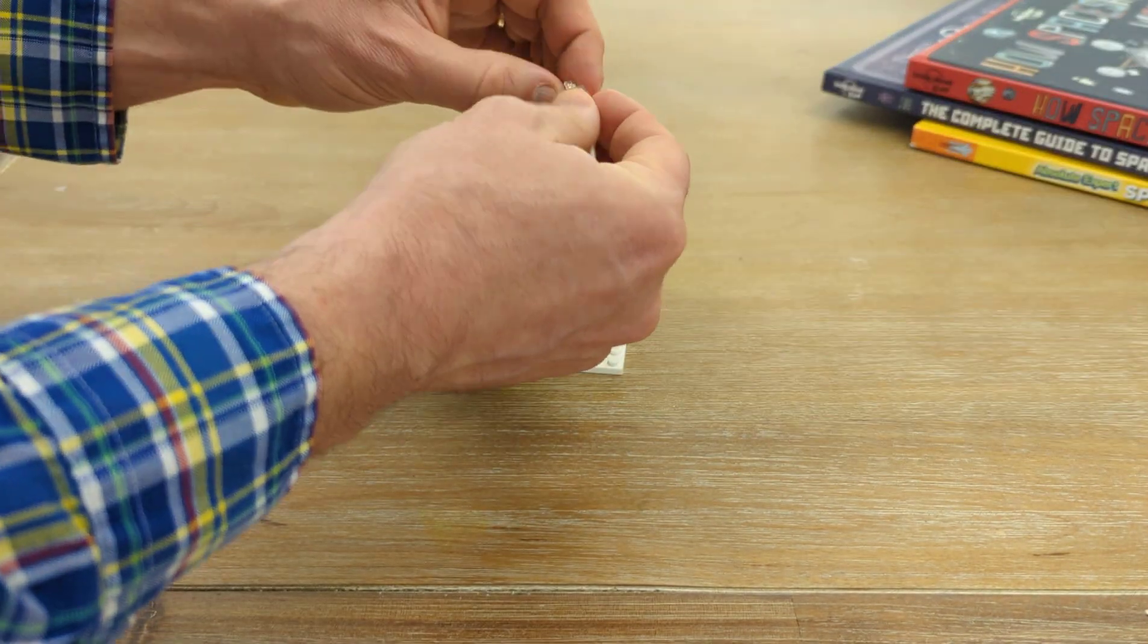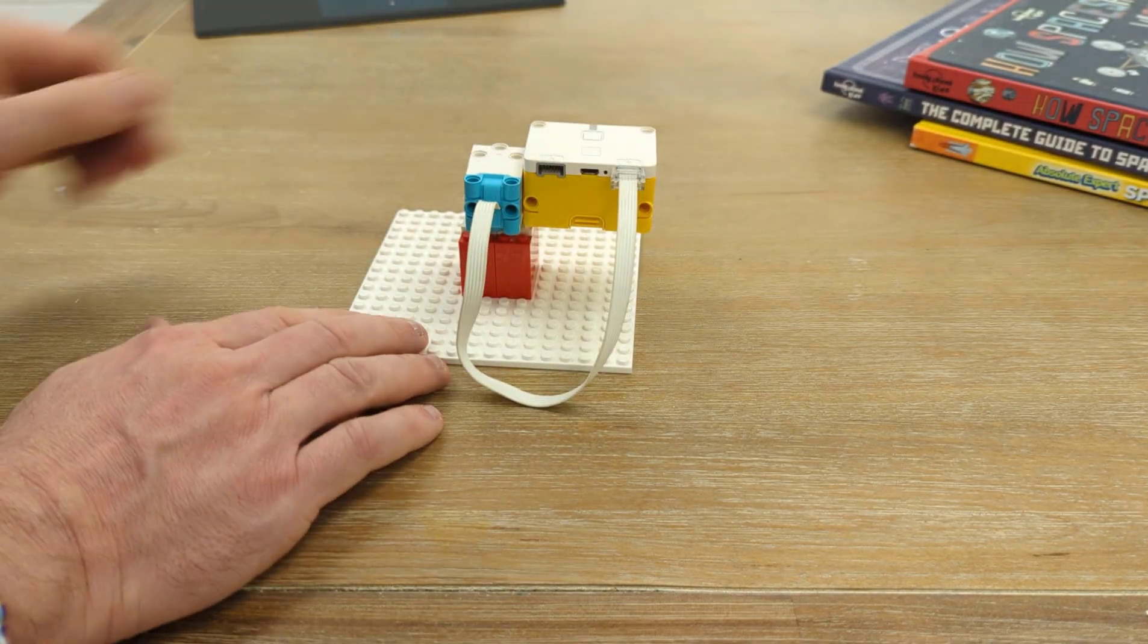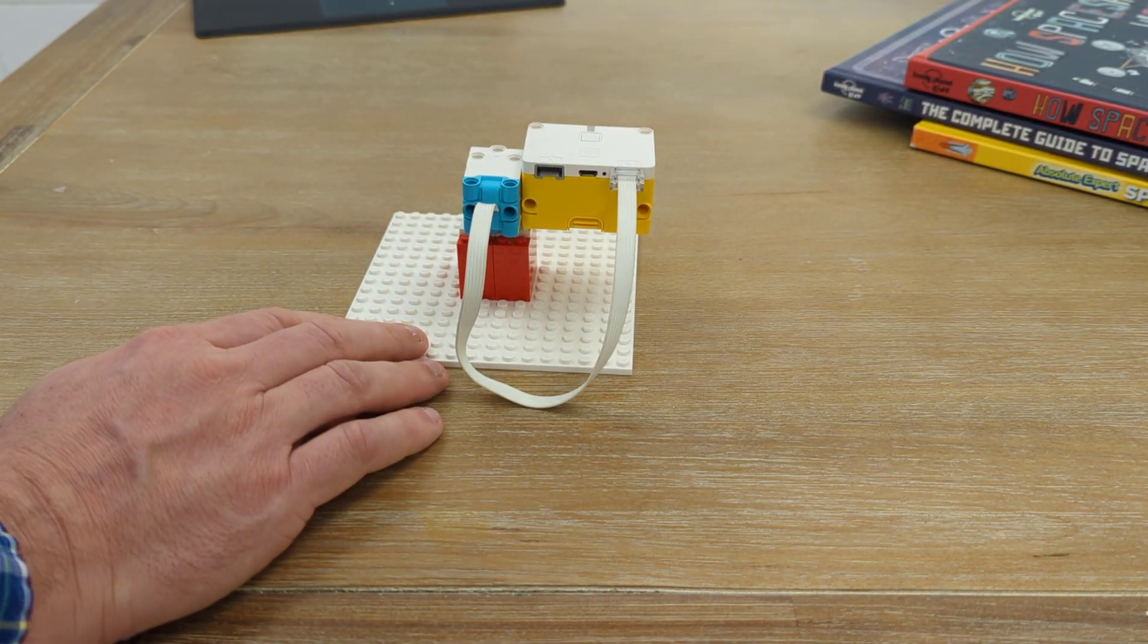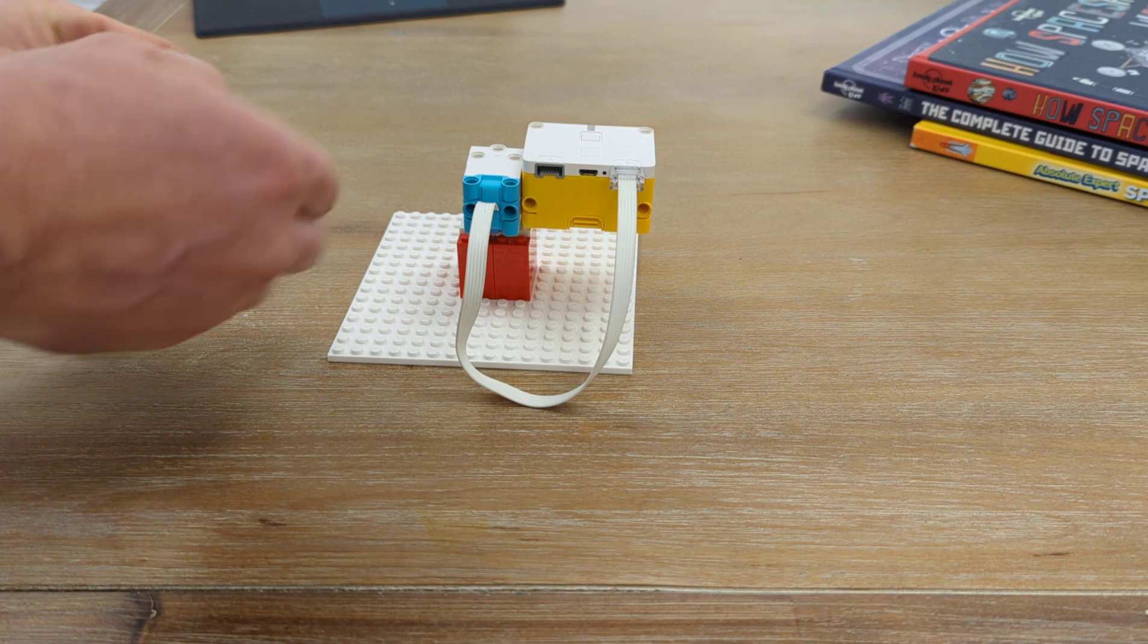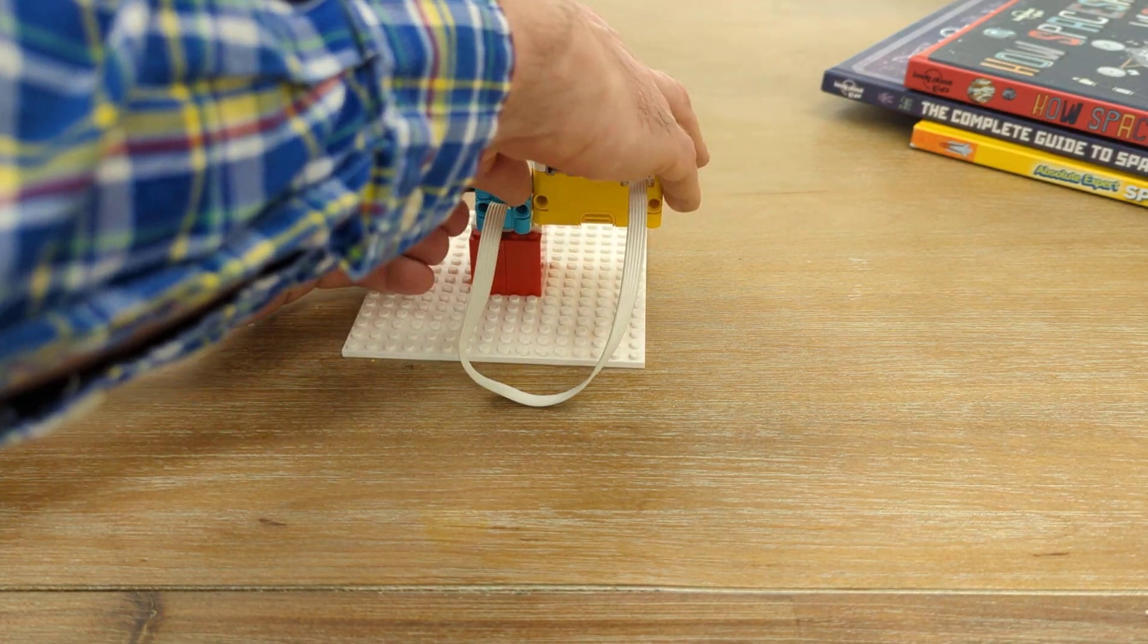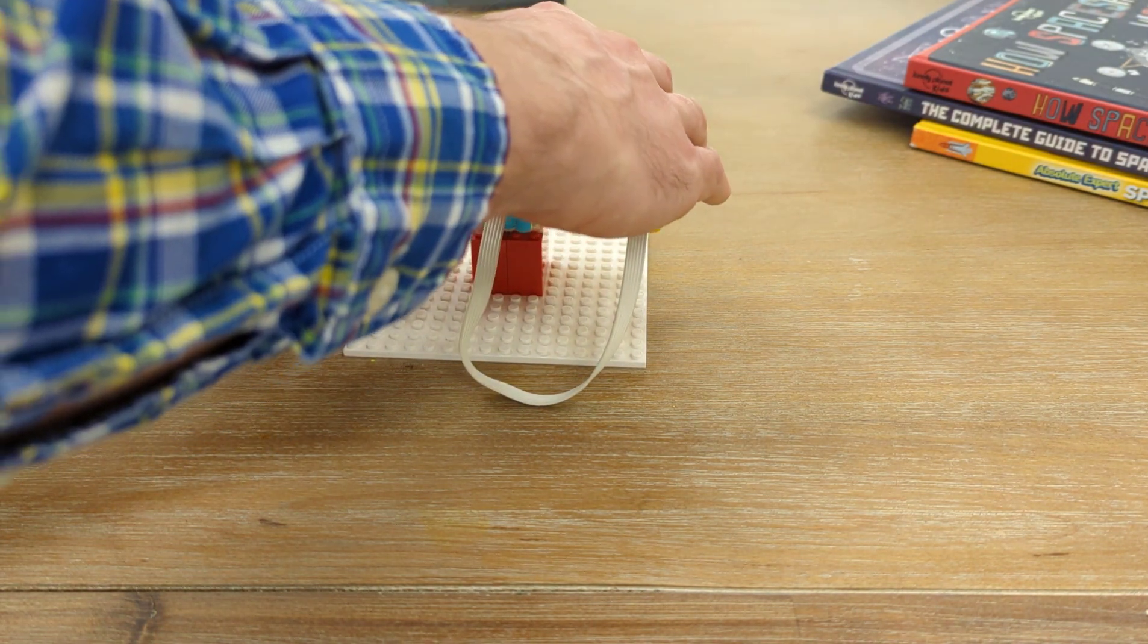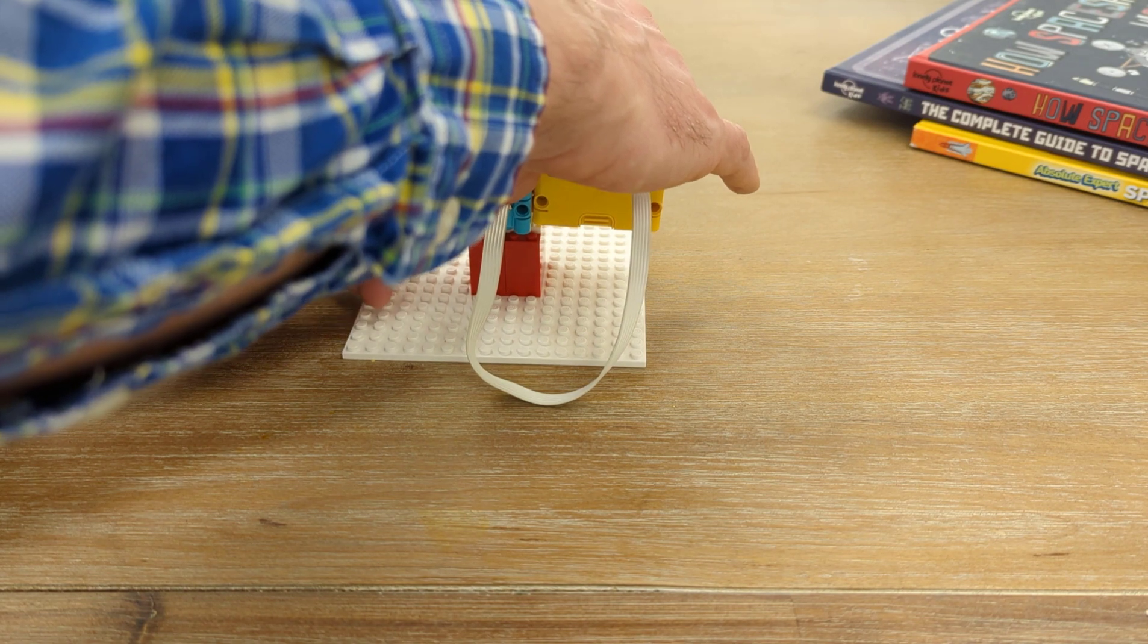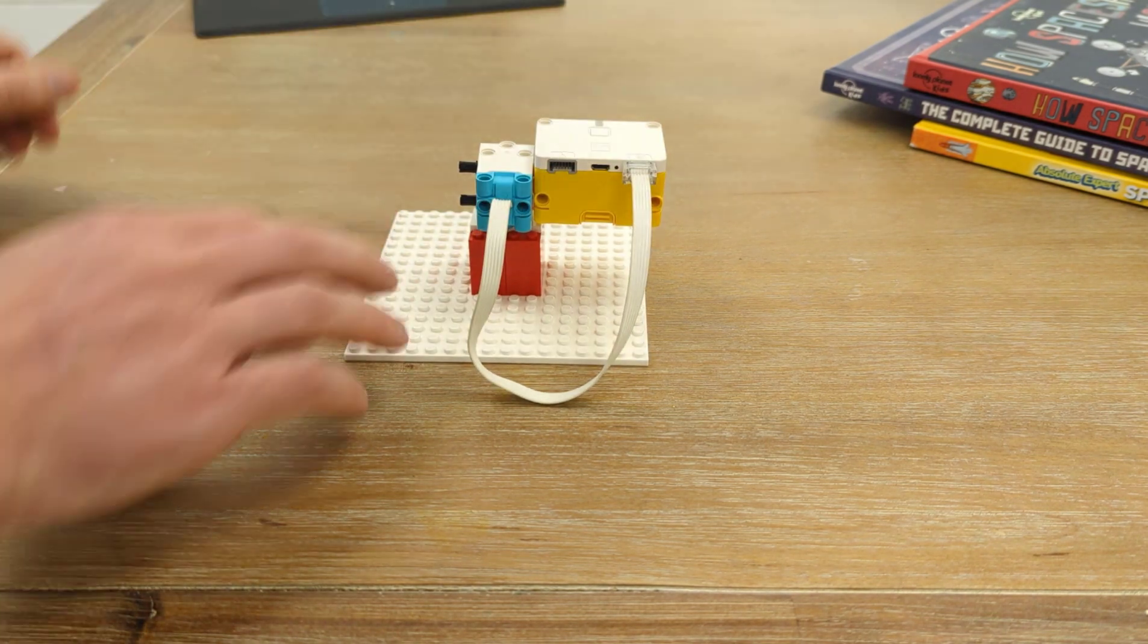I'm going to plug this into port B. Then I want to attach another motor on the opposite side of this. So I'm going to put some Technic pegs into the side of motor one.